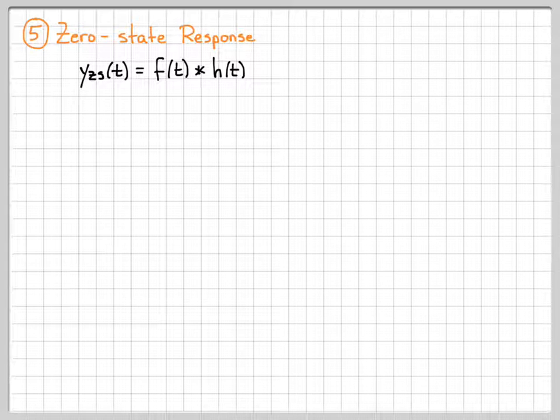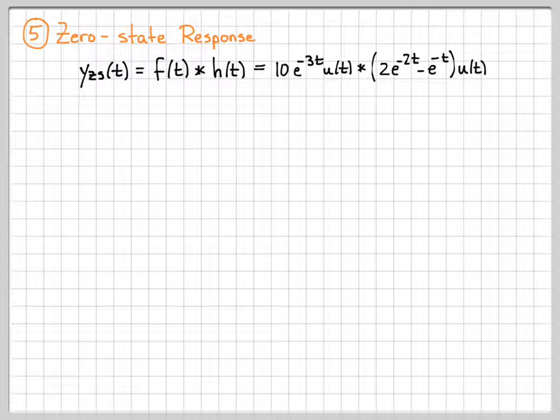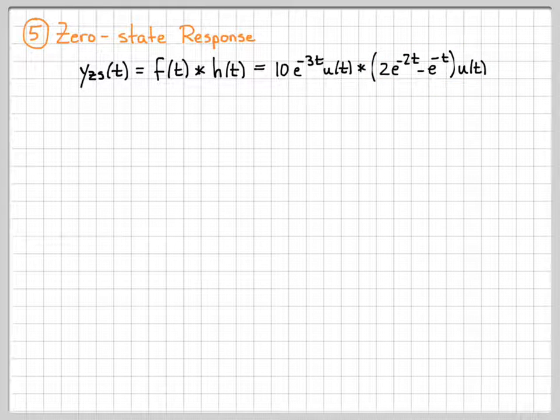Now we're ready to use that impulse response to convolve it with the input to find the zero state response of the system. So the zero state response is the input convolved with the impulse response. In this problem, in the first video, we were told that the input was equal to 10e to the negative 3t u of t. So that's f of t right there. And we're going to convolve this with h of t. So this equation right here is the impulse response that we found in the previous video.